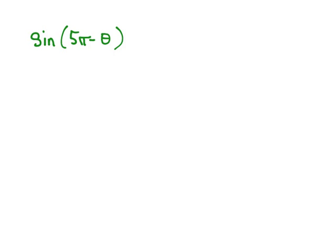We want to simplify the sine of 5π minus θ. So we're going to use our sine difference formula, which would say the sine of 5π times the cosine of θ minus the cosine of 5π times the sine of θ.